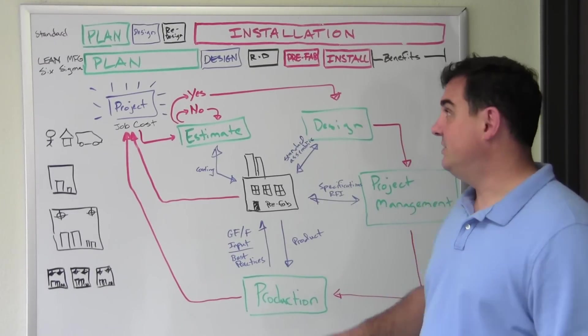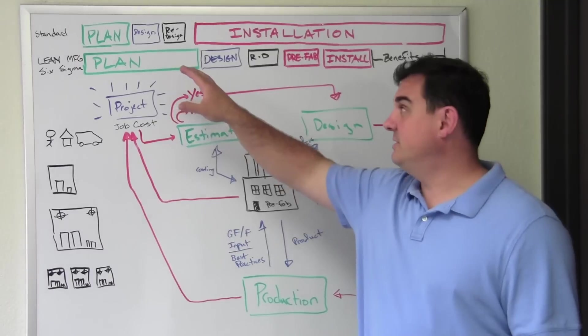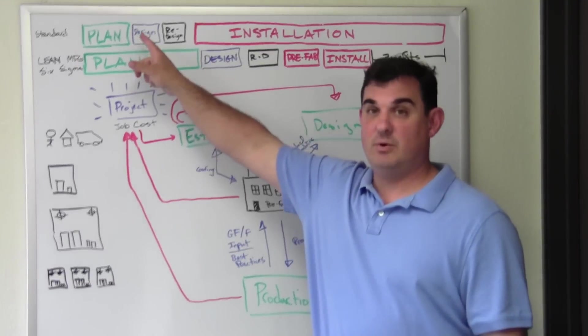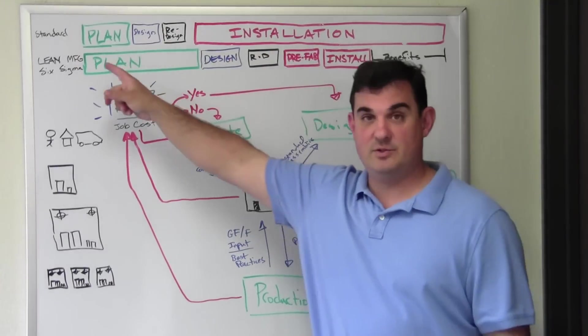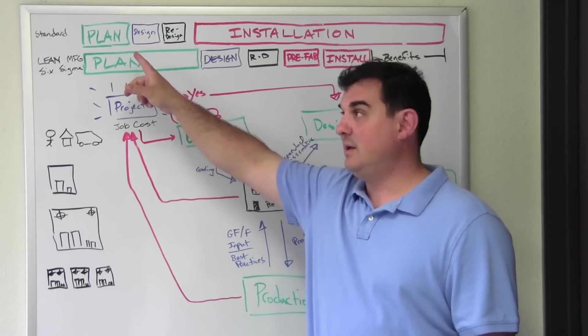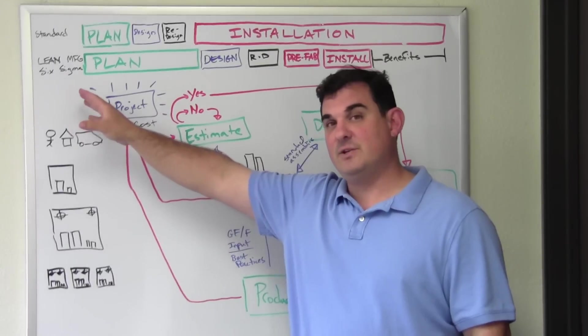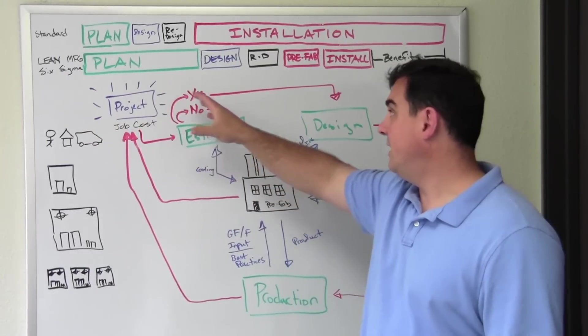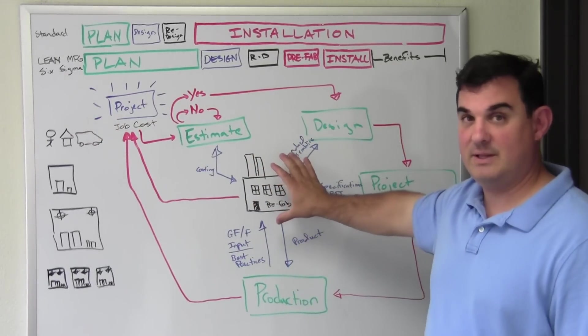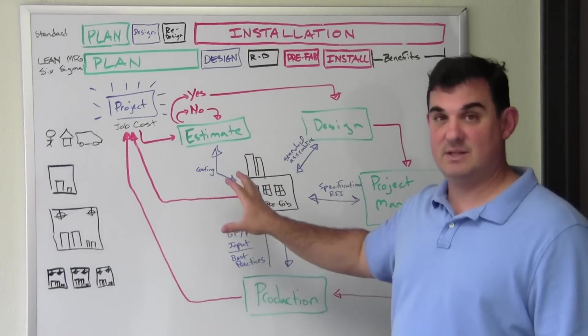Let's look at design for installation. The process for design for installation is you have one-thirds, two-thirds. One-thirds planning, design, redesign, and then two-thirds installation. But using lean manufacturing and Six Sigma and a prefabrication department that is designed for that,